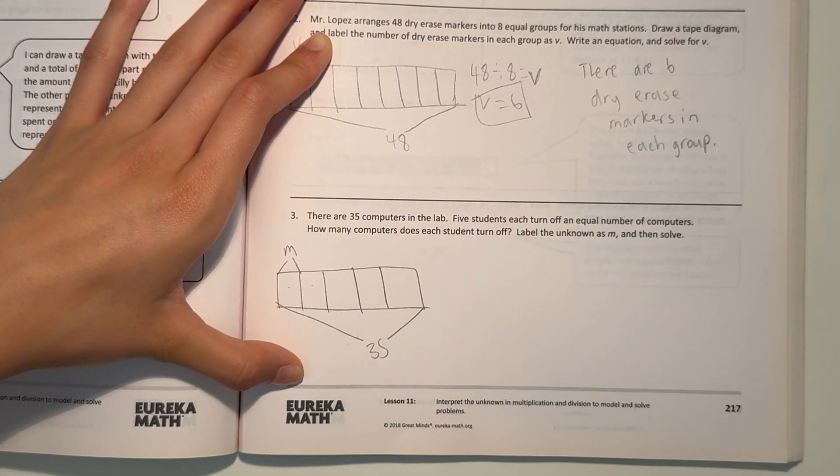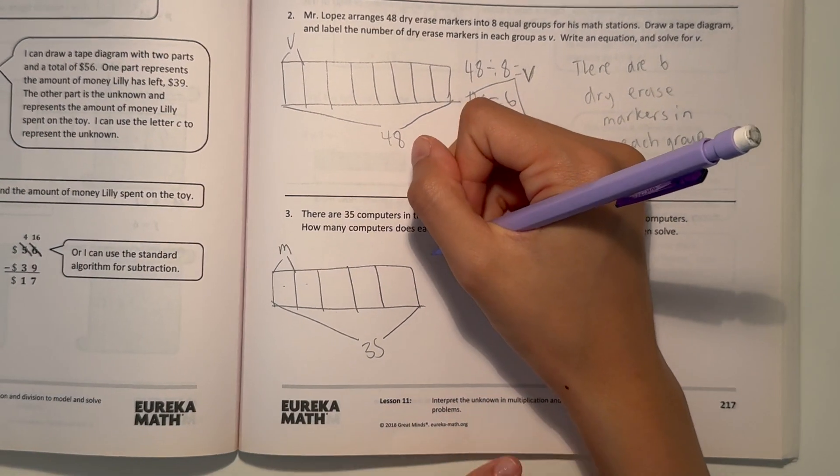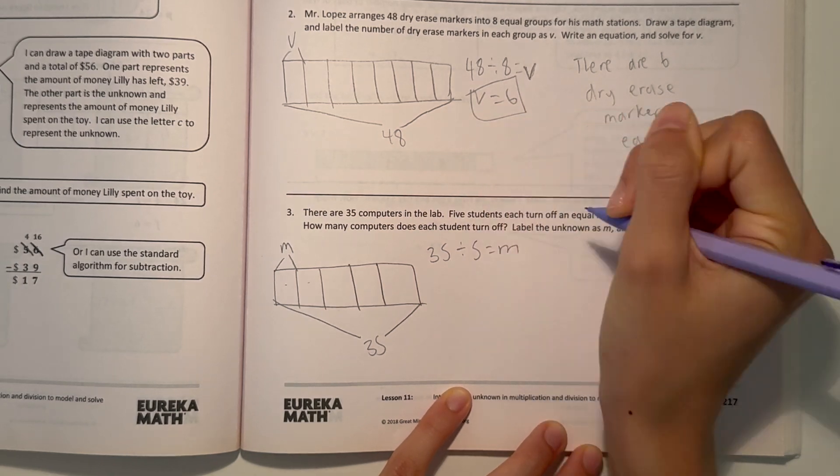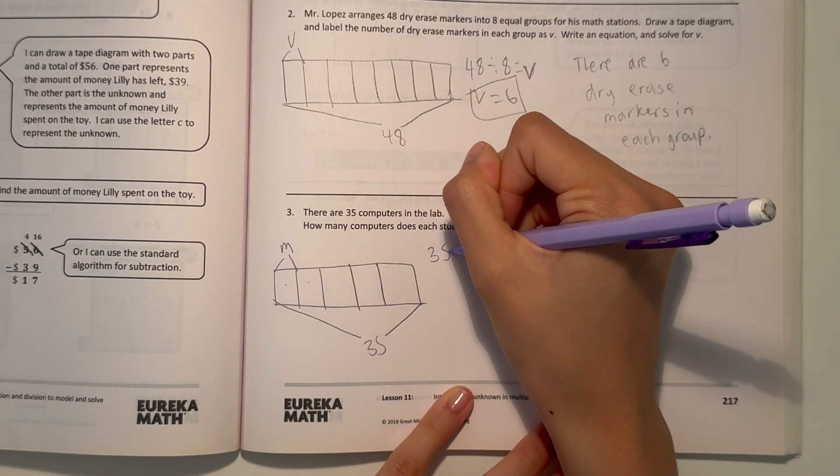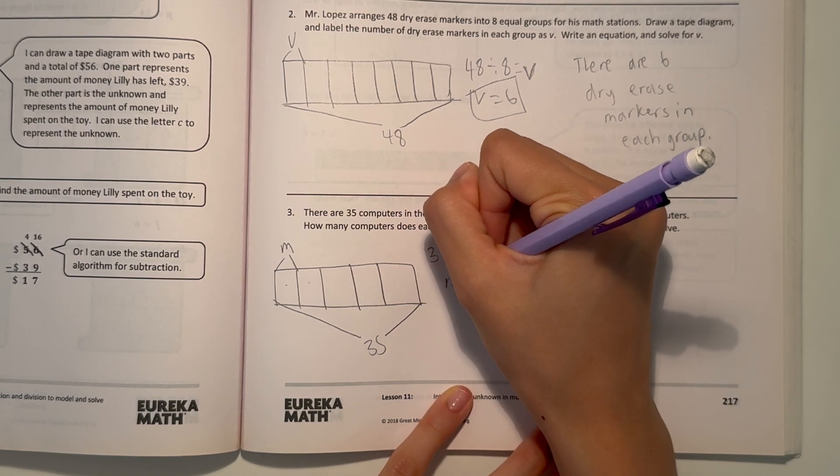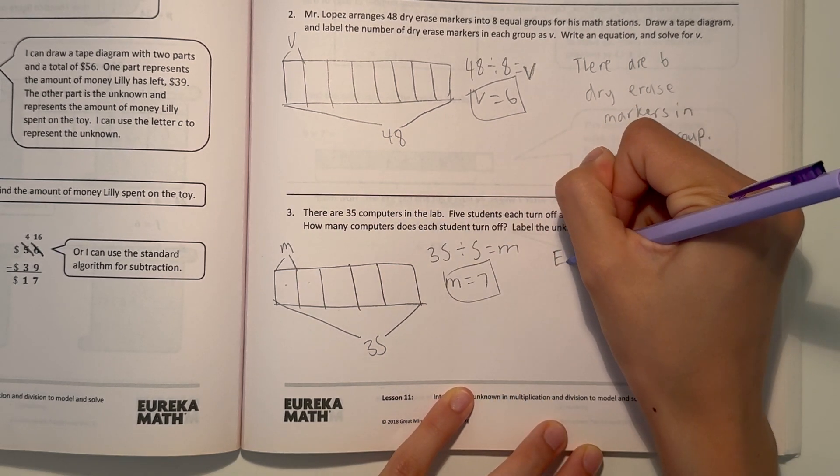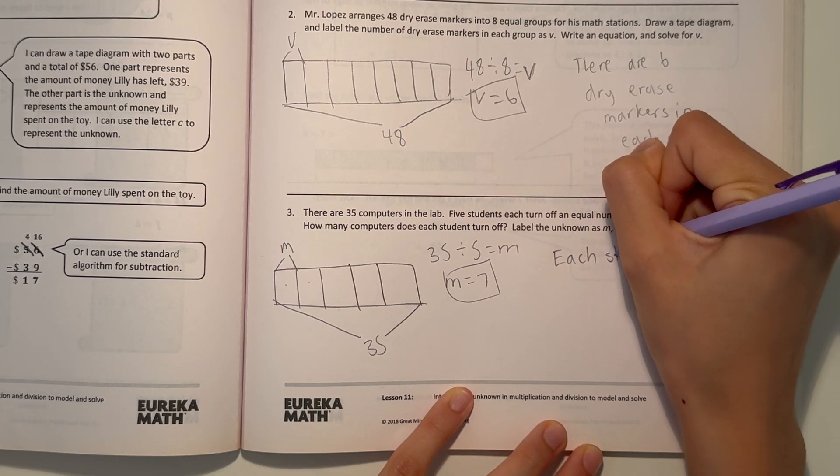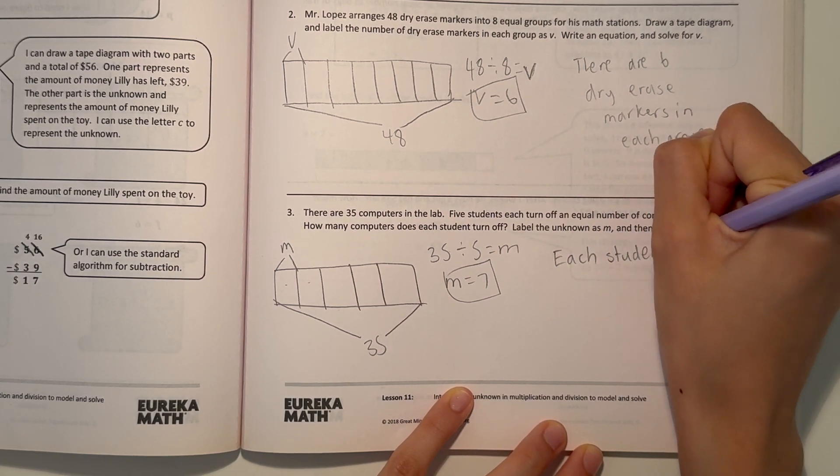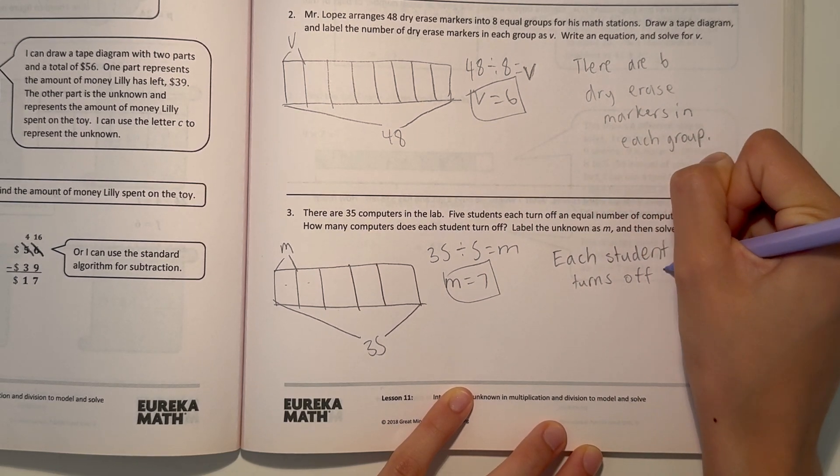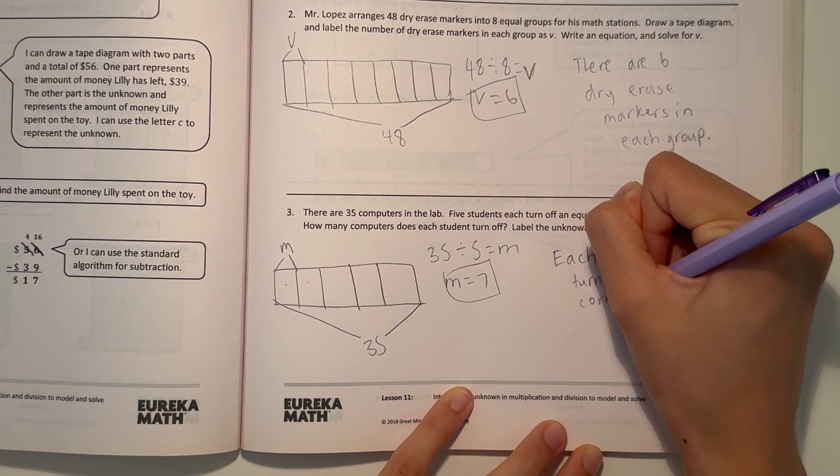How many computers does every student turn off? We write M for computers. So what we can do is 35 divided by 5 and that will give us M. So 35 divided by 5 is really 7, which means M equals 7. Each student turns off 7 computers.